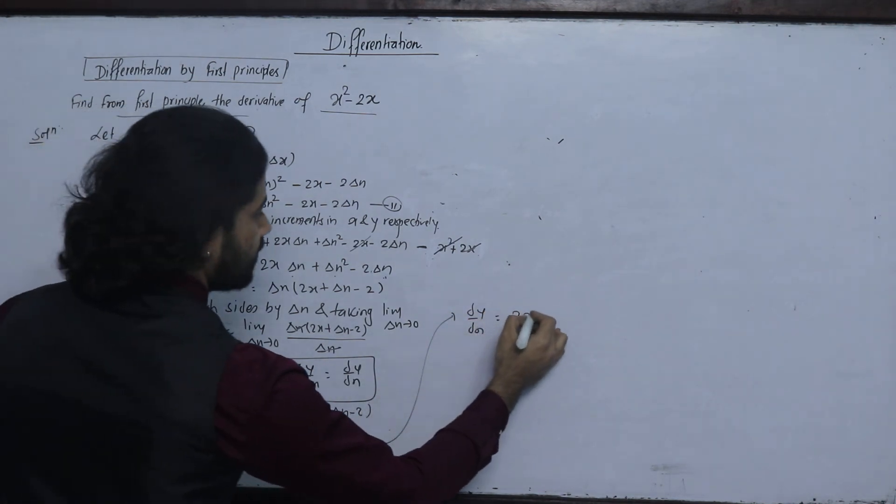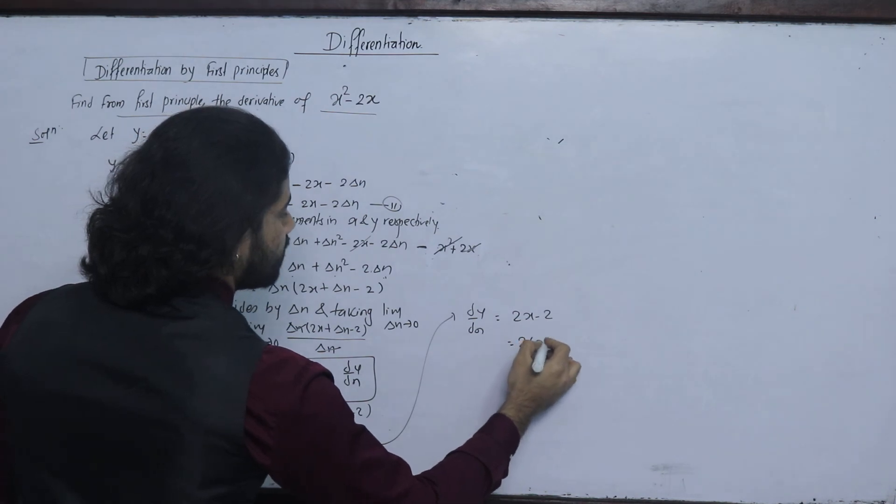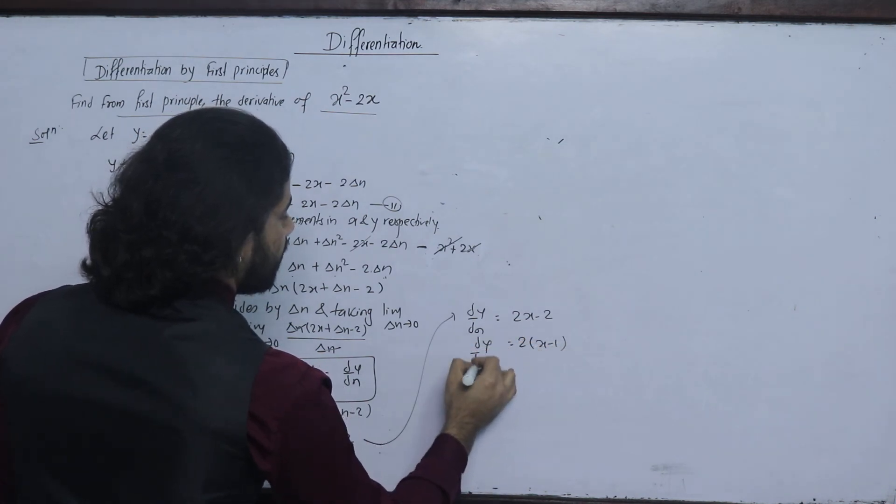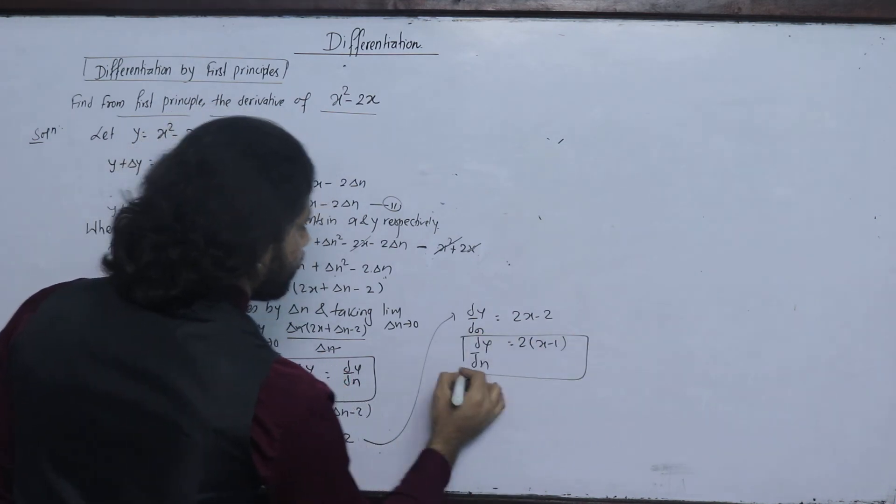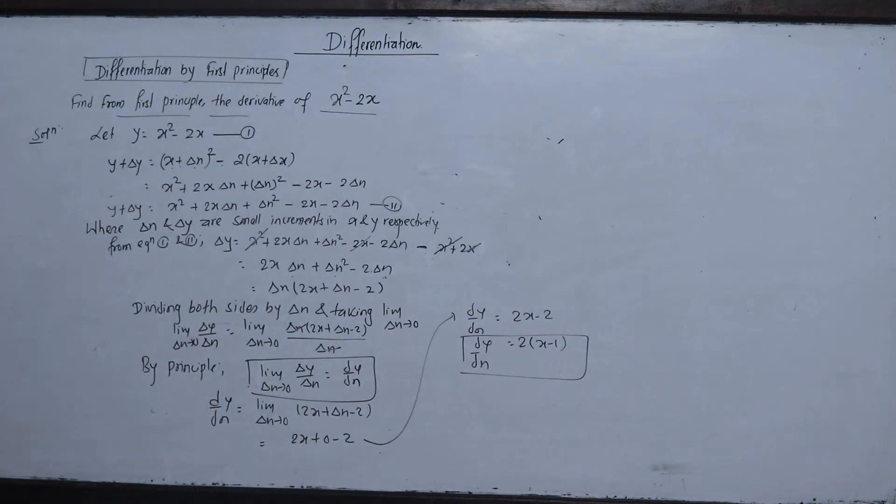2x minus 2, which can be written as 2 times x minus 1. This is the derivative of x square minus 2x.